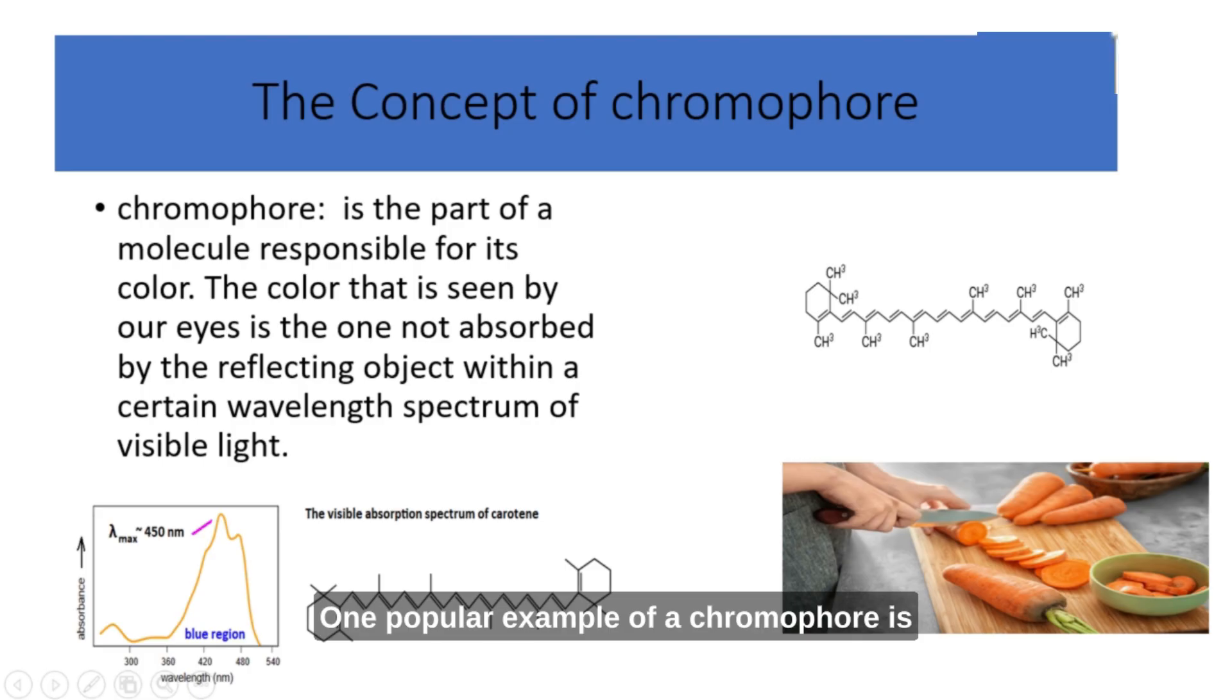One popular example of a chromophore is the conjugated system of double bonds found in molecules such as beta-carotene. Beta-carotene is the pigment responsible for the orange color of carrots and many other fruits and vegetables. The conjugated system in beta-carotene consists of a long chain of alternating single and double bonds. This arrangement allows the electrons in the double bonds to move freely along the chain, creating a pathway for electron delocalization.